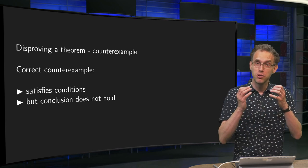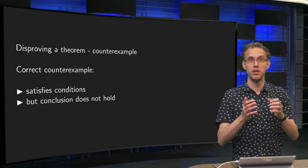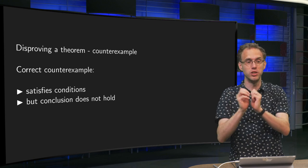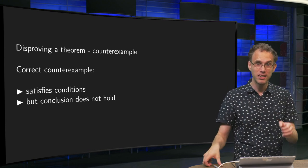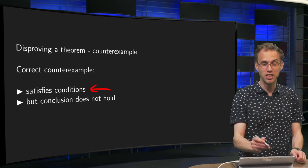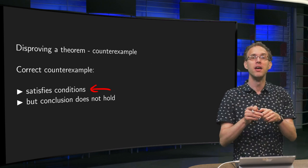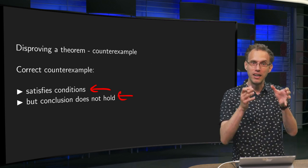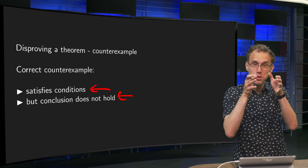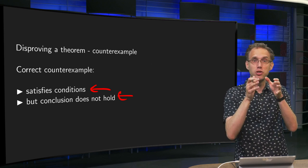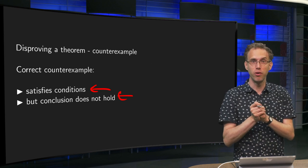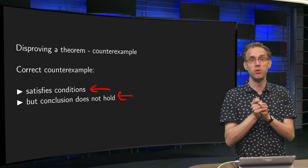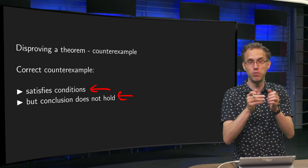So what constitutes a correct counterexample? You have a theorem which has some conditions and then comes some conclusion. A correct counterexample does satisfy the conditions of the theorem but does not satisfy the conclusion of the theorem. In that way you have an explicit example for which the theorem does not hold. Since the theorem is assumed to hold for all cases, that means the theorem is in general not true. This is a way to disprove a certain theorem.